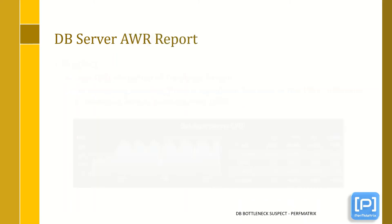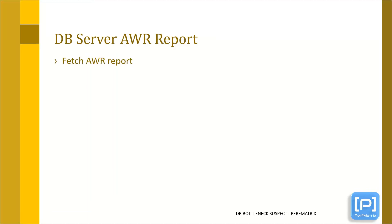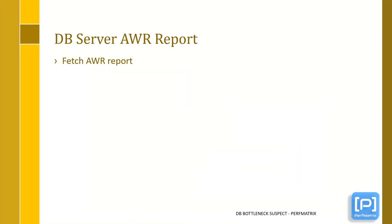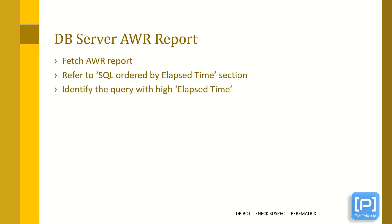Now let's try to find out the root cause of the issue. If you are using Oracle database, then it is good to generate the AWR report for the given period in which the test was executed. If you want to know how to generate an AWR report, then refer to the Perfmatrix article — its link has been given in the description section of this video. Since this is a short video, I will directly ask you to refer to the SQL ordered by elapsed time section, where you can see the elapsed time taken by each query. This section can be found in the AWR report.